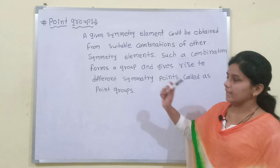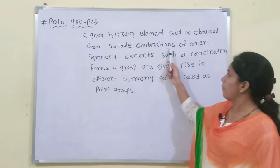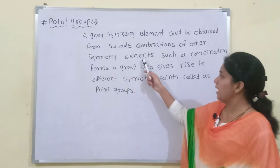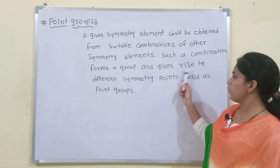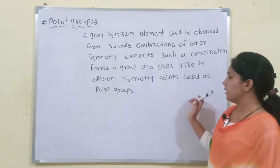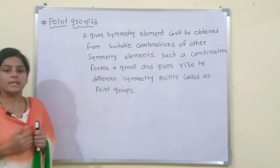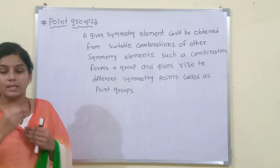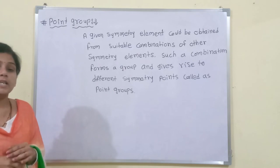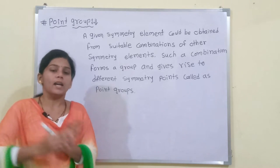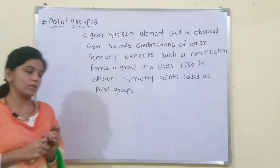A point group is formed when a given symmetry element can be obtained from suitable combinations of other symmetry elements. Such combinations form a group and give rise to different symmetry points called point groups. In simple terms, a point group is a combination of symmetry operations. From combinations of reflection and rotational symmetry, we get 10 different symmetry operations.